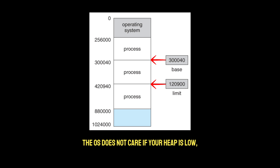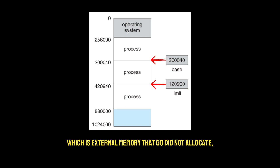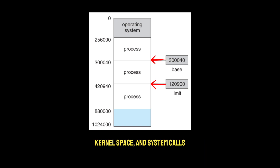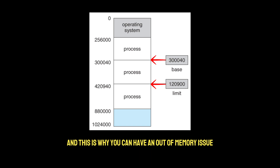The OS does not care if your heap is low. It only cares about the total memory used. And this includes heap memory, which is managed by Go's garbage collector; native memory, which is external memory that Go did not allocate; and memory overhead for stacks, kernel space, and system calls. If any of these add up to the memory limit, you are dead.